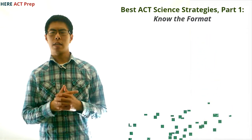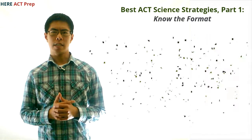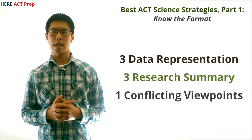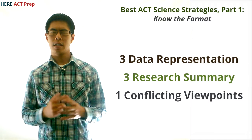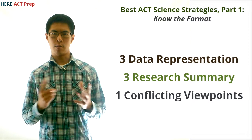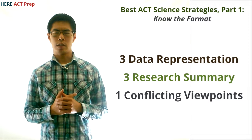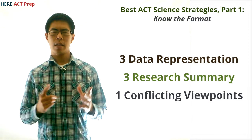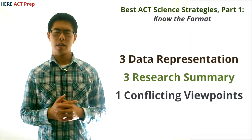Basically, the ACT Science Test has three different kinds of passages: data representation passages — three of them; research summary passages — three of them; and one conflicting viewpoints passage.